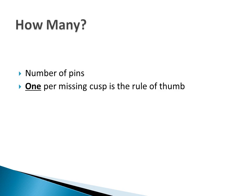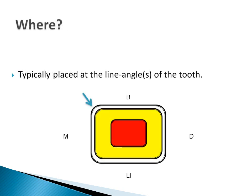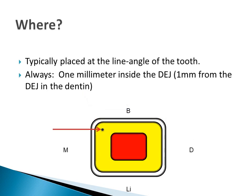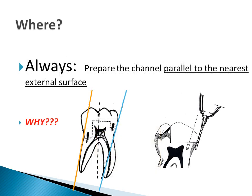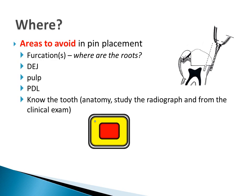How many pins would we need? One for each missing cusp is the general rule of thumb. Where should the pin be placed? The line angle of the tooth is usually the best location. 1 mm inside the DEJ is a safe place for a pin. We want to avoid the pulp and furcations. Another means of avoiding the pulp and the PDL is to place the pin parallel to the nearest external surface. We want to avoid the pulp, the DEJ, furcations, and the PDL. Study the tooth and the radiograph to know where these landmarks are located.